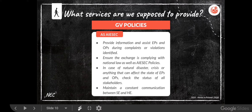Next, let's move on to GV policies. In GV policies, these are the things that we have to provide as AIESEC. We should provide information and help the exchange participant with all the complaints and violations identified during the experience, as well as to the opportunity providers — our partners, the NGO or school or firm that we have a contract with. We also have to ensure the exchange is complying with national law as well as AIESEC policies. In case of a natural disaster, crisis, or anything that can affect the state of the EP or the opportunity provider, we always have to look into the status of all stakeholders and make a rational decision based on it.